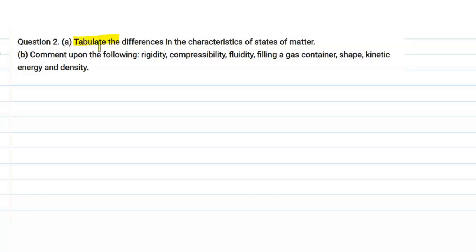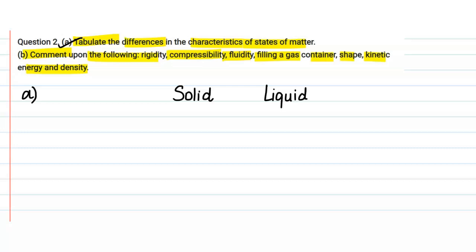Hello everyone. The given question says to tabulate the differences in the characteristics of states of matter. Part B comments on rigidity, compressibility, fluidity, filling a gas container, shape, kinetic energy, and density. We are going to do part A, where we differentiate between the three states of matter: solid, liquid, and gases, on the basis of some particular characteristics.